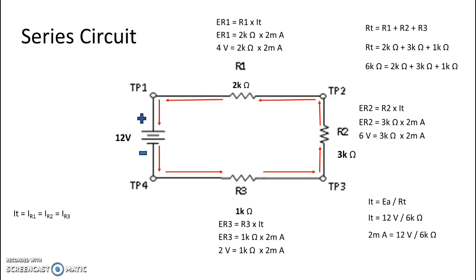If I were to move my reference point to test point 3 and keep my red at test point 2, now I would see 6 volts because my red lead is 8 volts and my black lead is 2 volts. So 8 minus 2 is 6 volts.